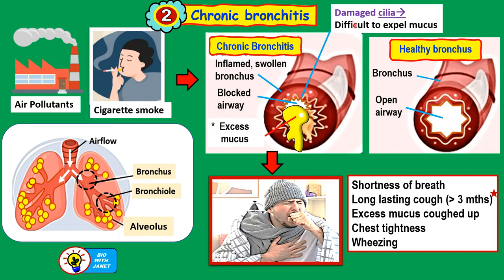Thirdly, there is damaged cilia — cigarette smoke damages the cilia, which are the tiny hair-like projections on the cells lining the bronchus or bronchioles. The damaged cilia cannot sweep out and expel the mucus because they cannot move, causing mucus to remain stuck inside the bronchial tubes. This causes the person to cough excessively to expel all this mucus, and the coughing will produce a lot of mucus.